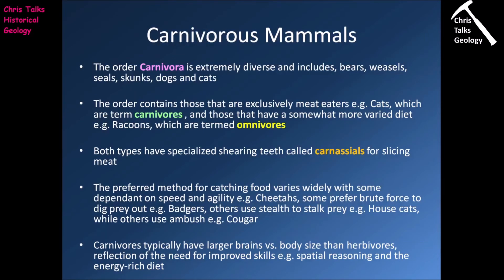Now let's move on to the carnivorous mammals. The order Carnivora is extremely diverse and includes organisms like bears, weasels, seals, skunks, dogs and cats. The order contains mammals which are exclusively meat eaters — termed carnivores — but also organisms with a more varied diet, such as raccoons, which are termed omnivores. Both carnivores and omnivores have specialized shearing teeth called carnassials, designed for slicing meat and situated before the molars on the lower jaw. These teeth are a key diagnostic feature for something to be considered part of the order Carnivora.